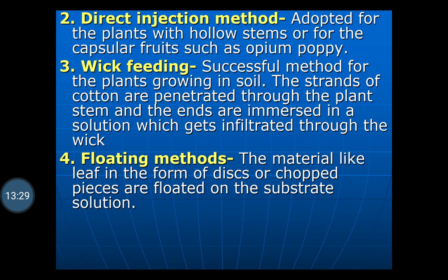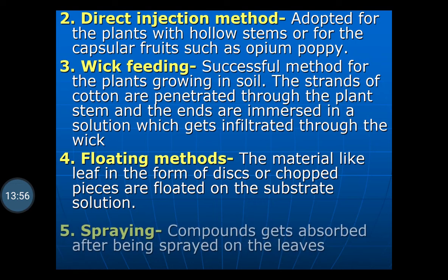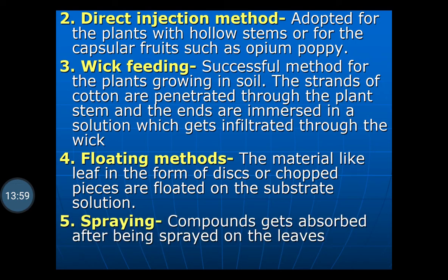Floating method: material like leaf in the form of a disk or chopped pieces are floated on the substrate solution. The leaf is cut and placed in the solution of the substrate so that absorption of the radioactive isotope is taken into the plants through the cut portion. Spraying method: the compounds get absorbed after being sprayed on the leaves — the solution of isotope is prepared and sprayed over the leaves, and absorption takes place from the surface of the leaves into the plants. In this way, the radioactive isotopes can be introduced into the biological system.